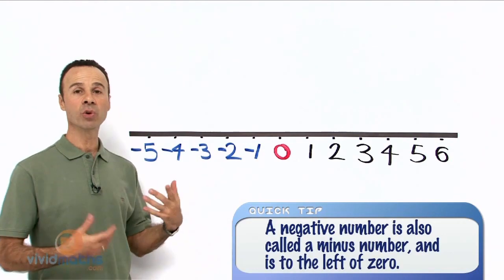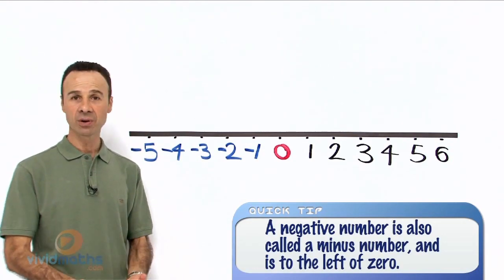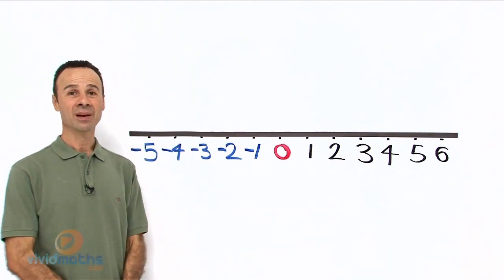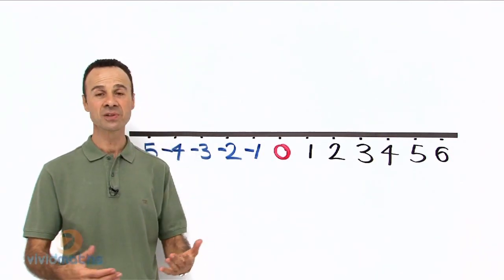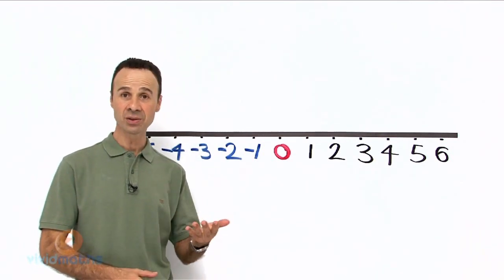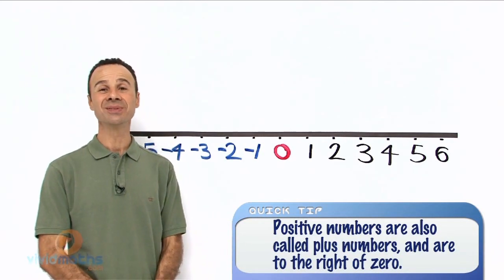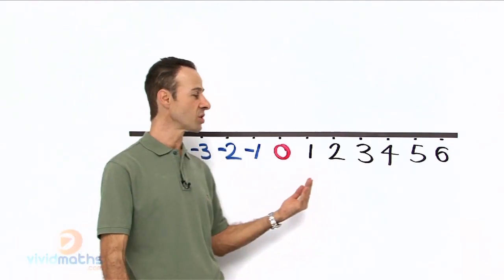Now negative numbers refer to a loss or a decrease or below or lower. To the right we have numbers that are positive, and they refer to an increase, to adding, to plussing and also to depositing. So the gains are over here and the losses are over here.